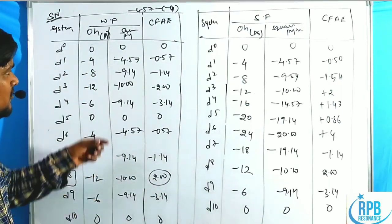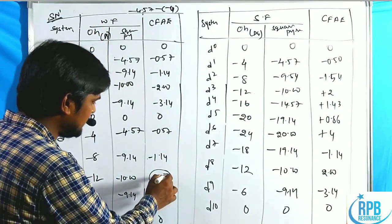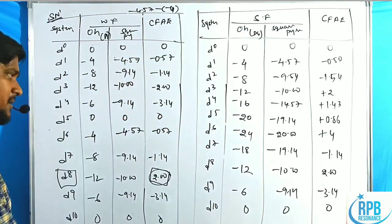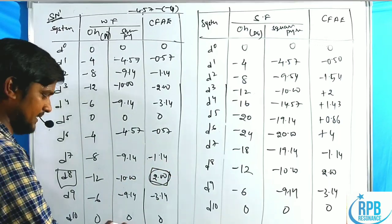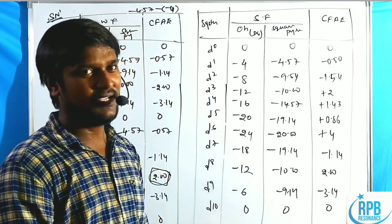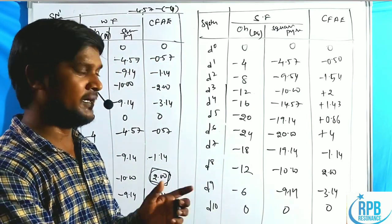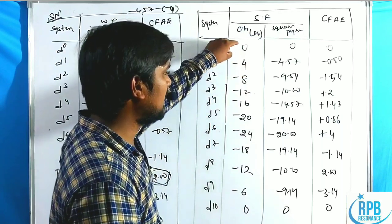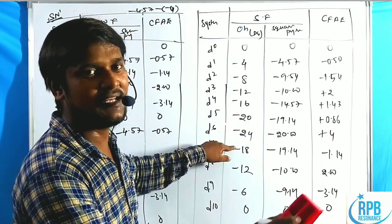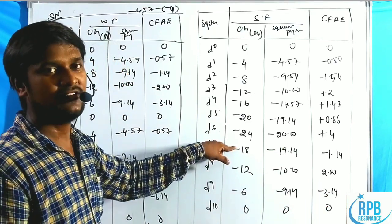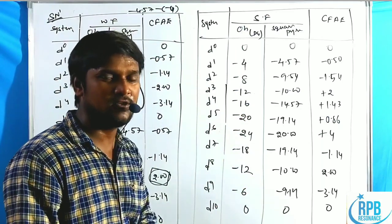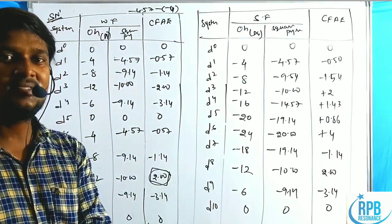In case of weak field complexes, only D8 configuration gives a positive CFAE value; remaining all are negative. That is why remaining all configurations are labile. Now for strong field complexes, the values increase up to D6 configuration because all electrons enter only the T2g orbital — pairing takes place. The CFSE values go: 4, 8, 12, 16, 20, 24 dq, then decrease to 18, 12, 6, 0.